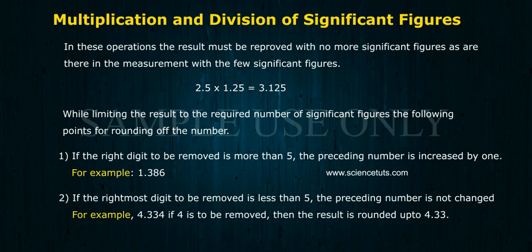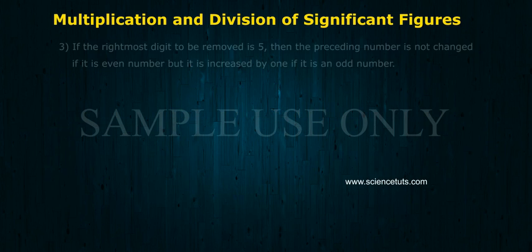Rounding Rule 2: If the rightmost digit to be removed is less than 5, the preceding number is not changed. For example, 4.334. If 4 is to be removed, then the result is rounded to 4.333.